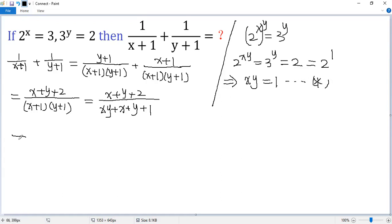So then by the conclusion of star, so we can change the value of xy to 1. So 1 plus x plus y plus 1. The top still, x plus y plus 2. Now the top still, x plus y plus 2, but the bottom, x plus y, 1 plus 1, again 2. So the answer is 1.